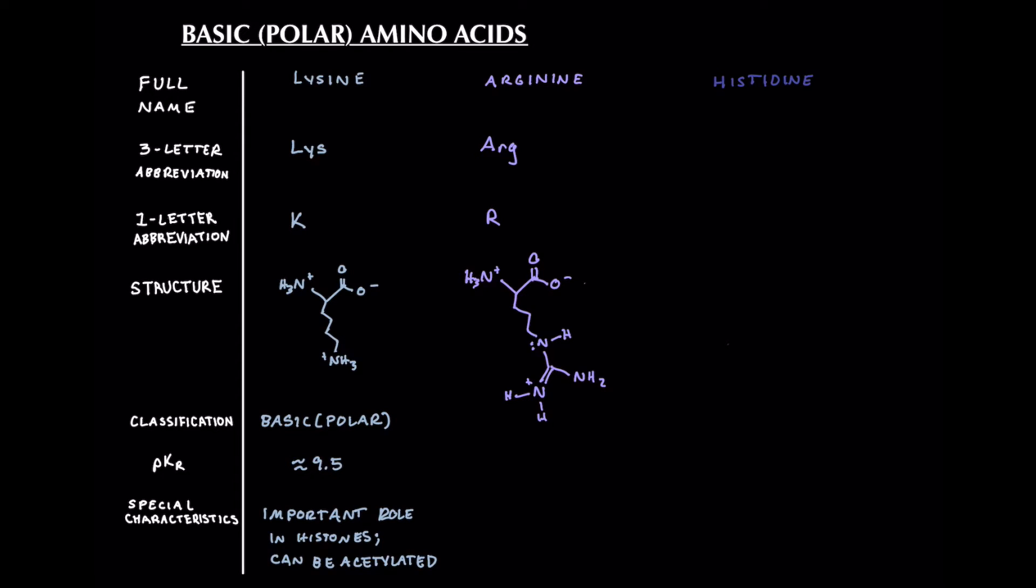So this functional group is called a guanidino group. Now it's not super important to the MCAT, but if you're wondering that is what it is called. It carries that positive charge. So its classification of course is basic or polar, being positively charged at our physiological pH. And its pKa is pretty high so it's not going to participate in a lot of acid base reactions. It's about 12.5 really, to be more specific about 12.48.